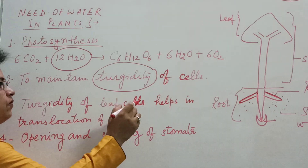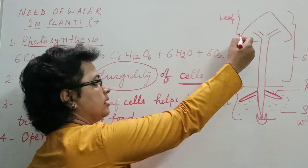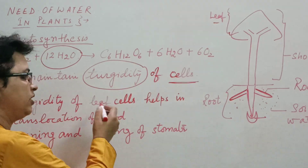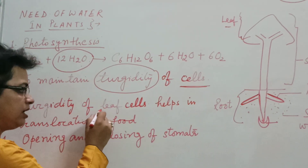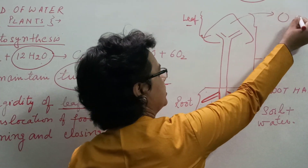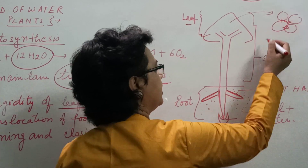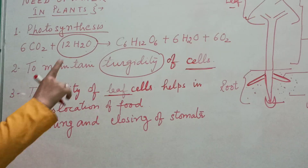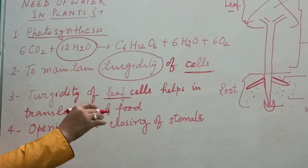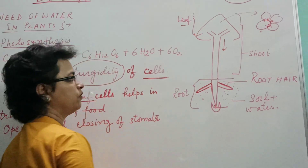Next, turgidity of the leaf — we are talking about the cells, that means all parts: canopy, leaf, shoot, and root. When turgidity is there in the leaf cells, these leaf cells are interconnected with each other. When cells are in a turgid condition and interconnected, and as food is being made through photosynthesis, it helps in translocation of food in a downward direction.